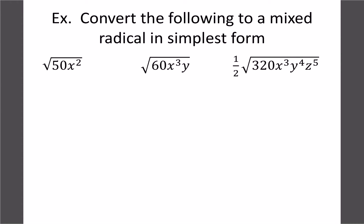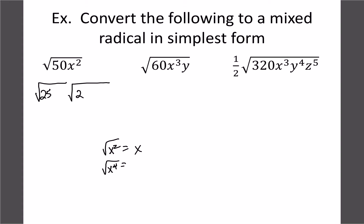Now let's add variables. We break it into two roots just as before, handling numbers and variables separately. Because it's a square root: √(x²)=x, √(x⁴)=x², √(x⁶)=x³. We're dividing the exponent by the index: 2÷2=1, 4÷2=2, 6÷2=3. For cube roots we need multiples of 3: ∛(x³)=x, ∛(x⁶)=x², ∛(x⁹)=x³. For square roots pull out exponents 2, 4, 6, 8; for cube roots 3, 6, 9, 12; for fourth roots 4, 8, 12.